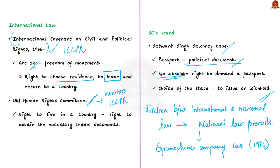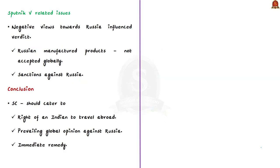Regarding the Sputnik V issue, the Supreme Court noted there is no law preventing an Indian citizen from travelling abroad, but the petition was handled in a manner the op-ed author finds unsatisfactory. According to the author, the Supreme Court appeared influenced by negative views toward Russia in the context of the Russian invasion of Ukraine, which has impacted the global acceptance of Russian products including Sputnik V.